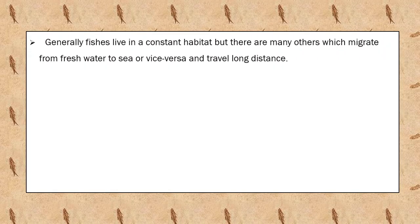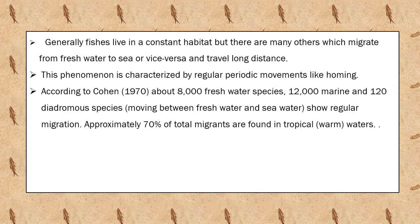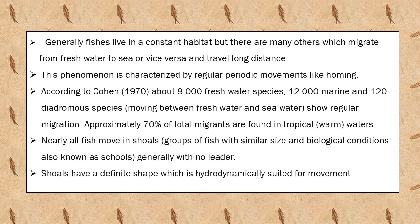Generally, fishes live in a constant habitat, but there are many others which migrate from freshwater to sea or vice versa and travel long distances. This phenomenon is characterized by regular periodic movements like homing. According to Cohen in 1970, about 8,000 freshwater species, 12,000 marine, and 120 diadromous species show regular migration. Approximately 70% of total migrants are found in tropical waters. Nearly all fish move in shoals, generally with no leader. Shoals have a definite shape which is hydrodynamically suited for movement.